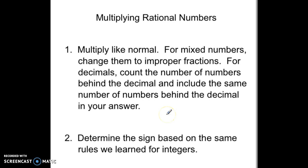Basically, all you have to do is multiply like normal. When you see mixed numbers, change them to improper fractions. For decimals, count the number of numbers behind the decimal and include the same number of numbers behind the decimal in your answer. Determine the sign based on the rules we learned for integers. It's everything you've done before, just combining a couple things together.